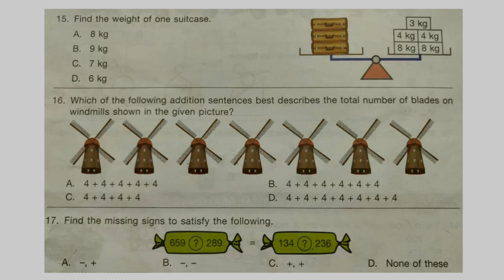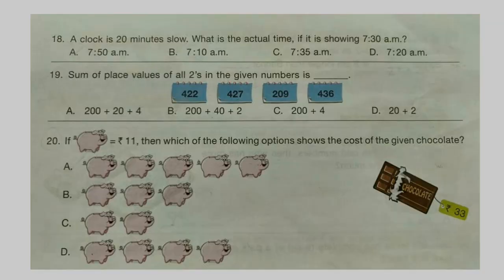Question 17: Find the missing signs to satisfy the following. Question 18: A clock is 20 minutes slow. What is the actual time if it is showing 7:30 am?